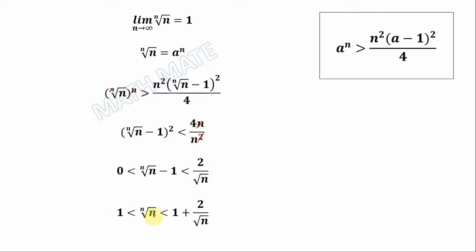We have on the left hand side 1, and here minus 1, negative 1 cancelled with 1. On the right hand side we have 1 plus 2 divided by square root of n. So the limit from the left hand side goes to 1.